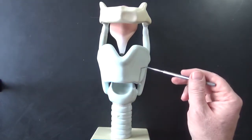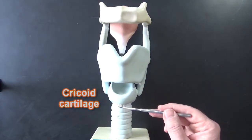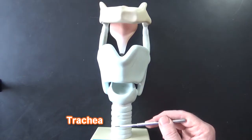This is thyroid cartilage right here. This is the cricoid cartilage down here and then the trachea is going to be down here.